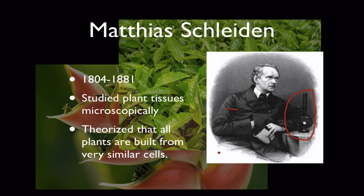By looking at lots and lots of different types of plant tissues, he noticed that plant tissues all looked basically the same. So he came up with the idea that all plants are made from a similar structure — a similar architecture of cellular shape — what we now refer to as plant cells.